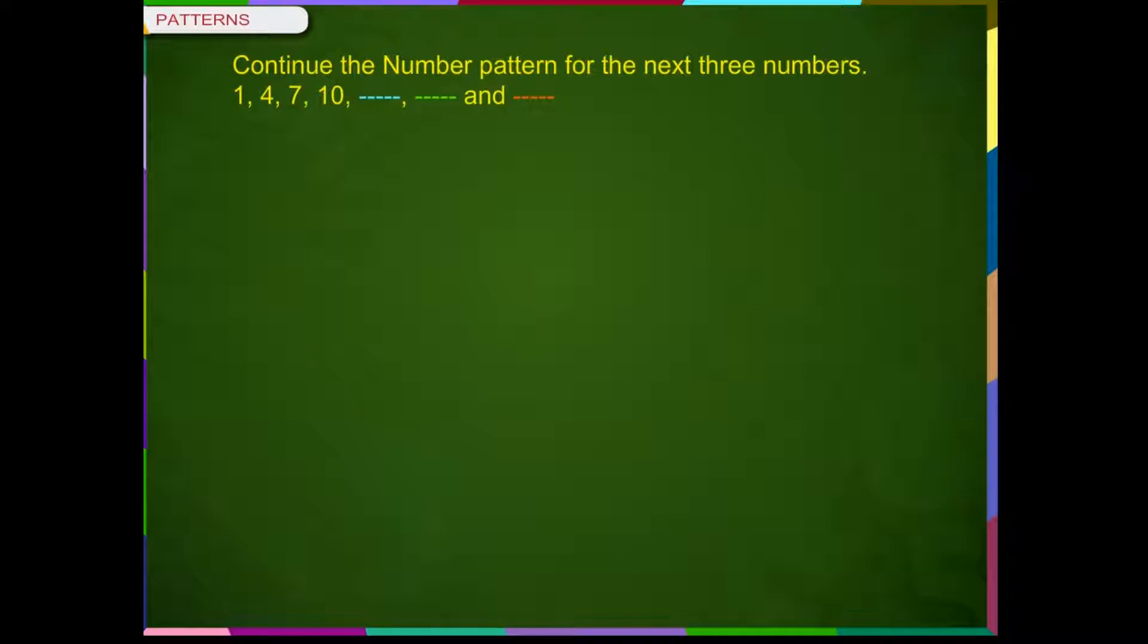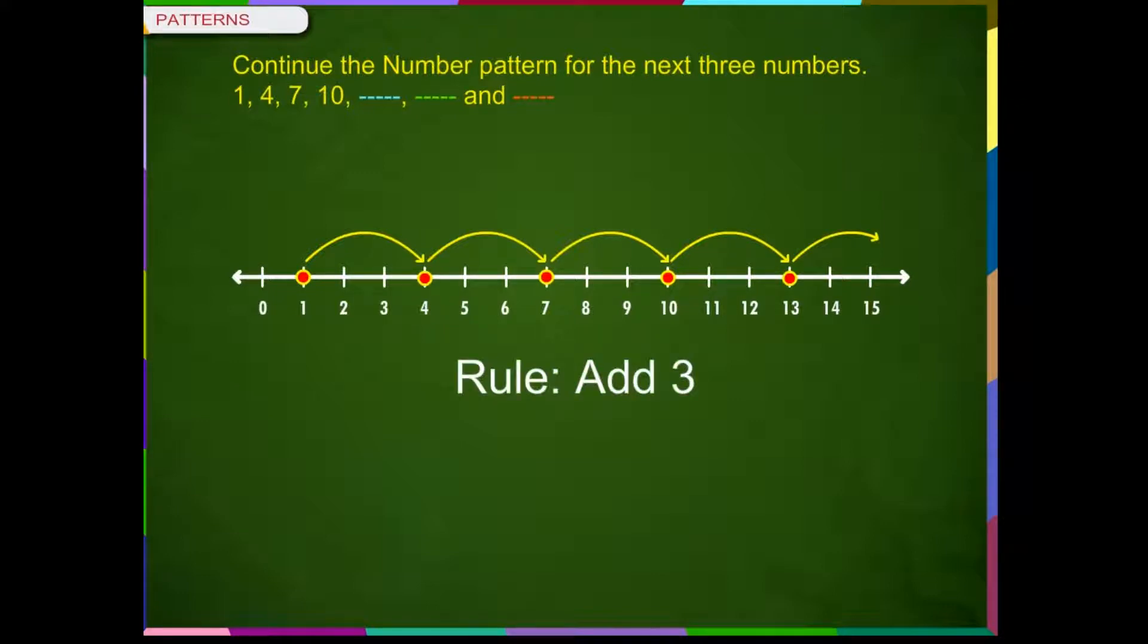Solution: Let us place the numbers on the number line and we can say that numbers start at 1 and jump 3 every time. So, the pattern rule is add 3. Therefore, the next three numbers will be 13, 16 and 19.